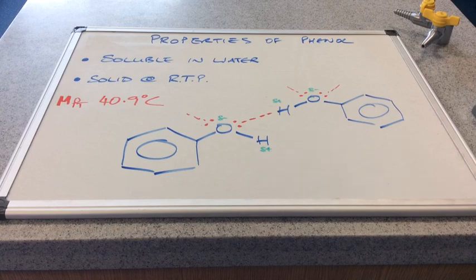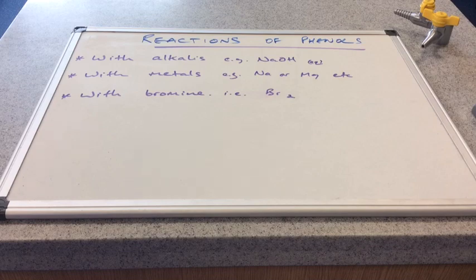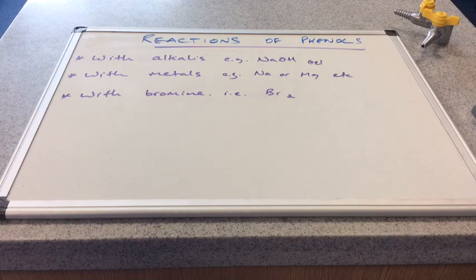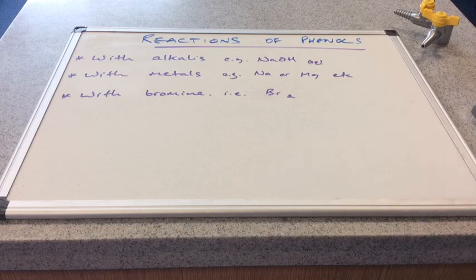So we're going to look at the reactions of phenols now. And there are three reactions you need to know for OCR. And they are the reactions with alkalis, so for example sodium hydroxide solution, with metals, and the other one is with bromine. And of course, bromine's formula is Br2. So we'll look at each one in turn and any observations that you may need to be aware of as well.